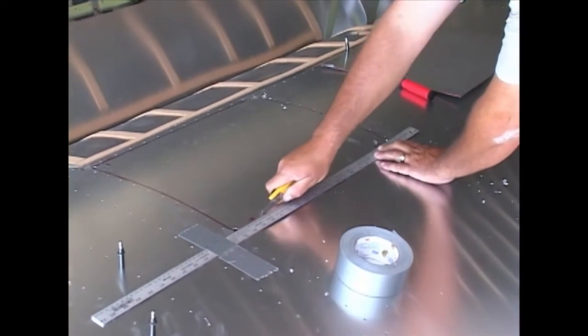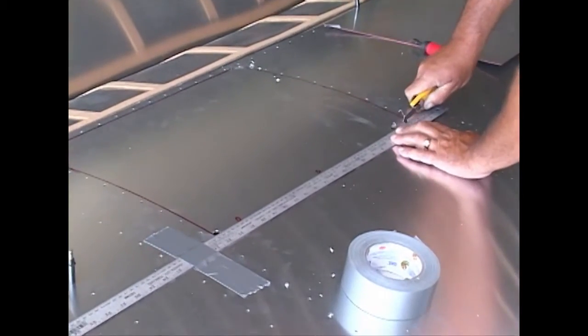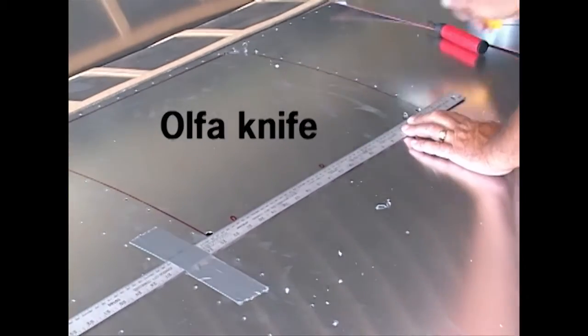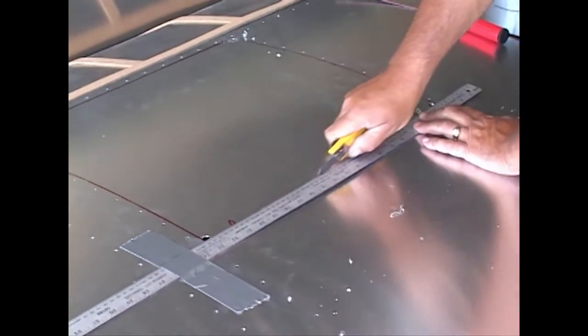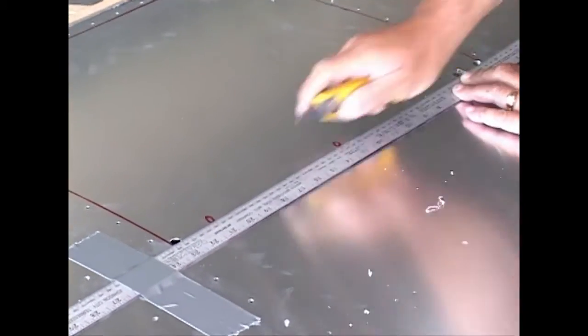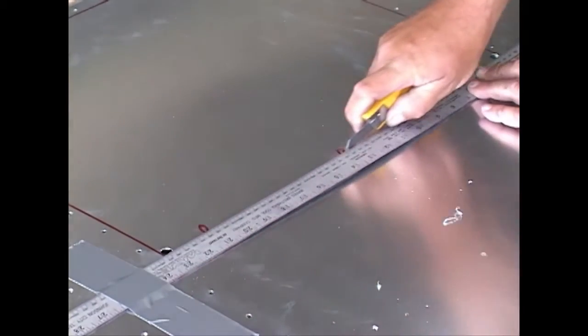The knife we are using is called an Olfa knife and it is inexpensive but highly desirable in creating nice smooth straight cuts into the thin aluminum skin.